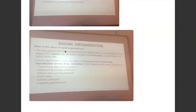What is the value and importance of social organization? The two groups that have developed proper social organization to a particularly high degree are insects — things like termites and bees — and mammals like wild dogs and naked mole rats. Social organization is very valuable because it improves the survival and reproductive success of an individual. When we look at animals and even at plants, the main goal of their life is to reproduce, continue the population, and to survive to sexual maturity.